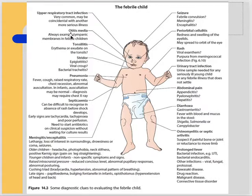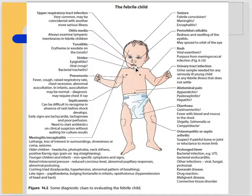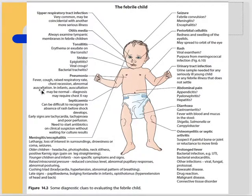Otitis media has been covered in ENT. Always examine the tympanic membrane in febrile children - that is very important. Always examine the oral cavity for tonsillitis. Check for any stridor, which suggests croup, epiglottitis, or bacterial tracheitis. Examine the chest: fever with cough, raised respiratory rate, chest recessions, and abnormal auscultation findings suggest pneumonia. In infants, auscultation may be normal and diagnosis may require a chest X-ray.